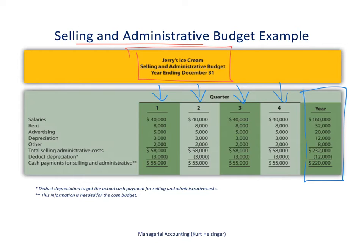The selling and administrative budget contains all operating costs outside of the production facilities and production process. The first line item is salaries — these could relate to accounting personnel, marketing personnel, or computer support staff within the company. We're estimating these costs for each quarter. For the first quarter, we expect selling costs of about $40,000.